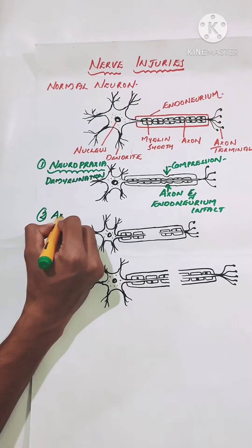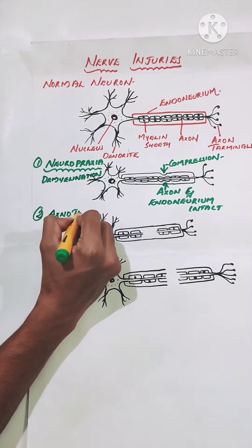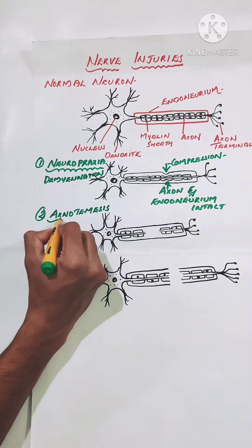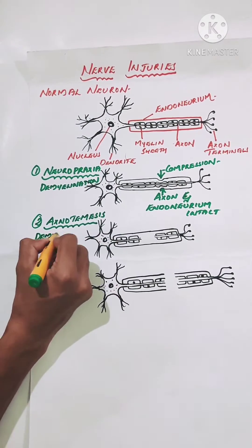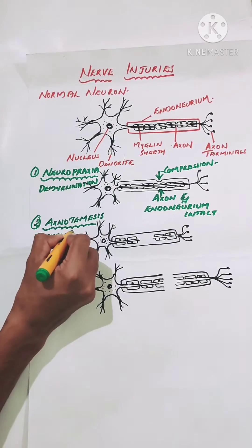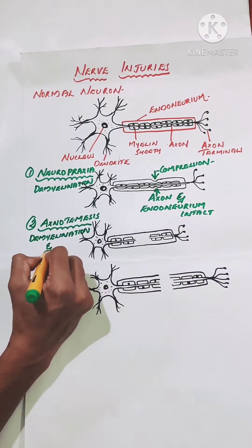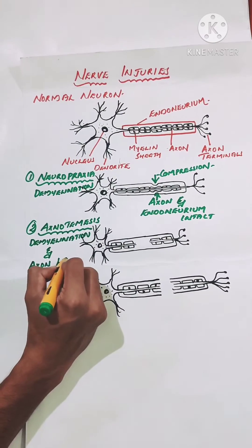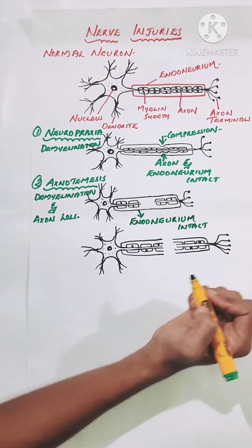The second type of nerve injury is known as axonotemesis. In this kind of nerve injury, the axons and the myelin sheath are damaged, but there is no damage to the endoneurium, perineurium, or epineurium. The terminal portion of the neuron will undergo Wallerian degeneration.